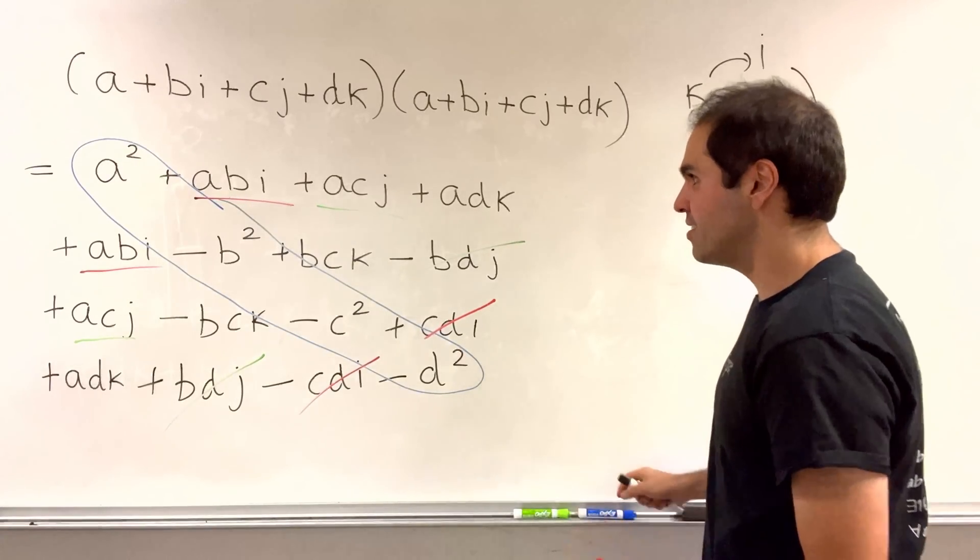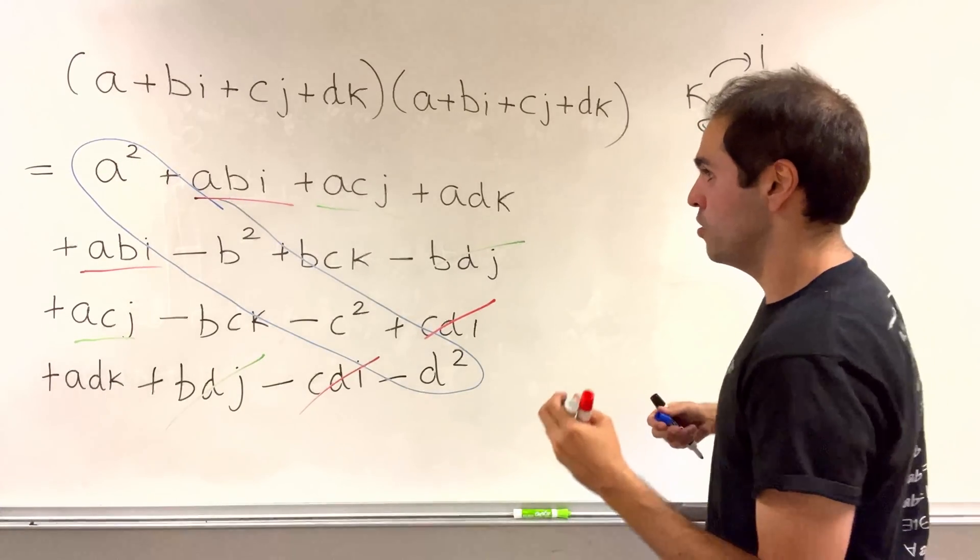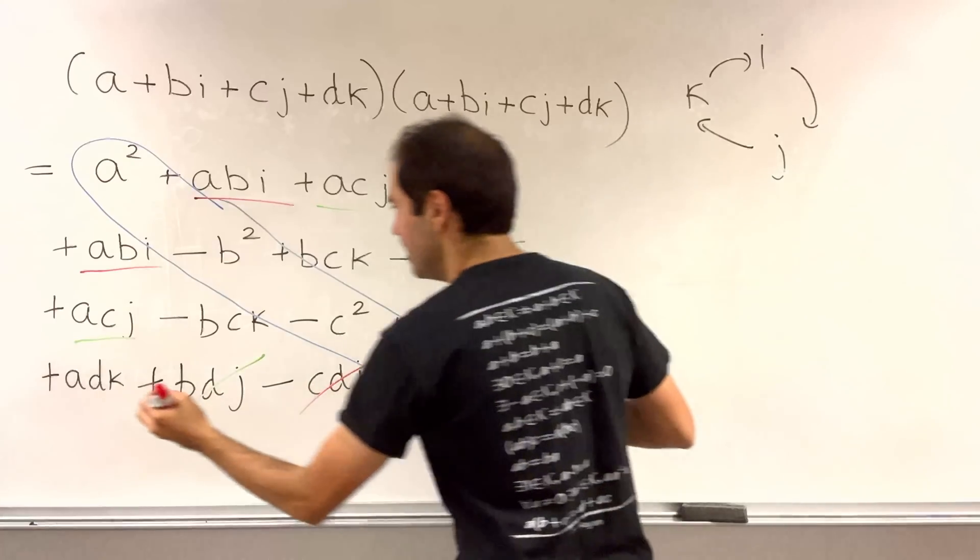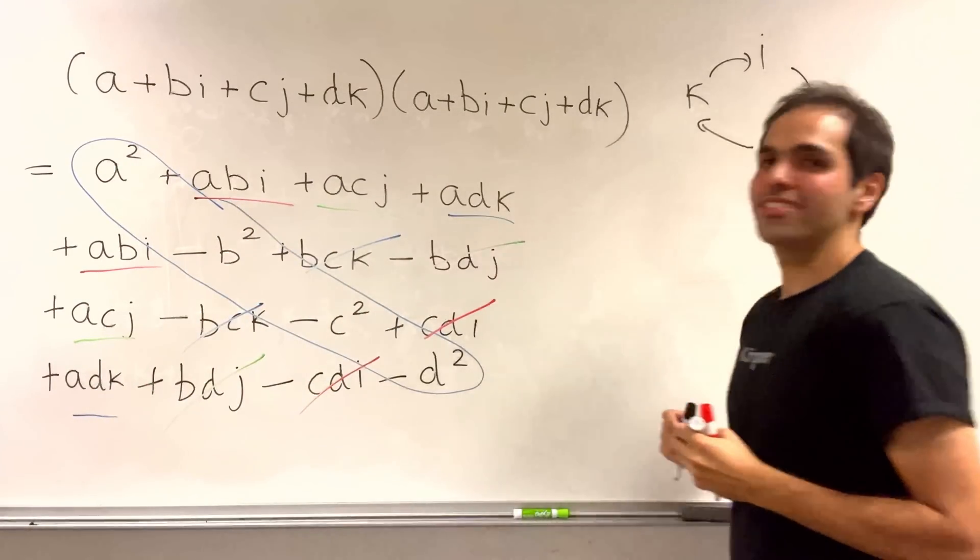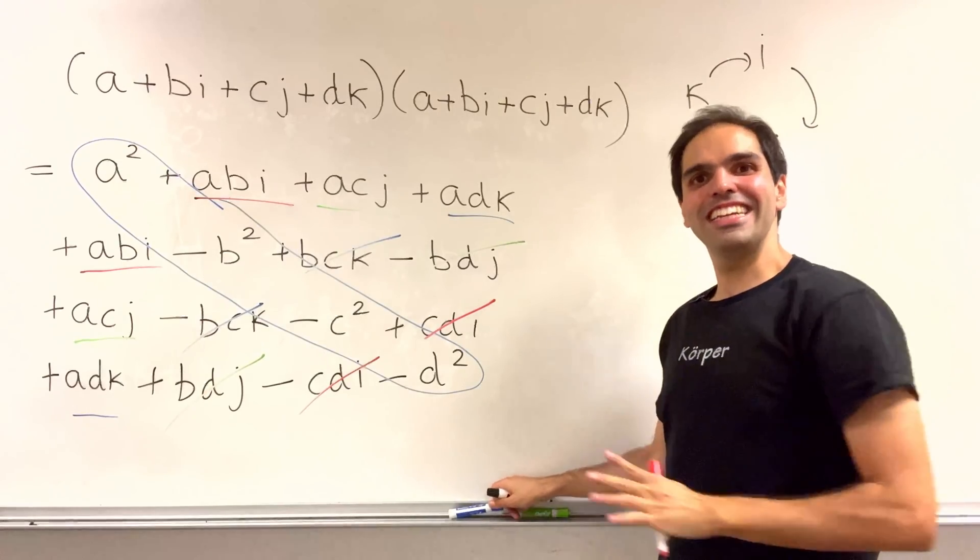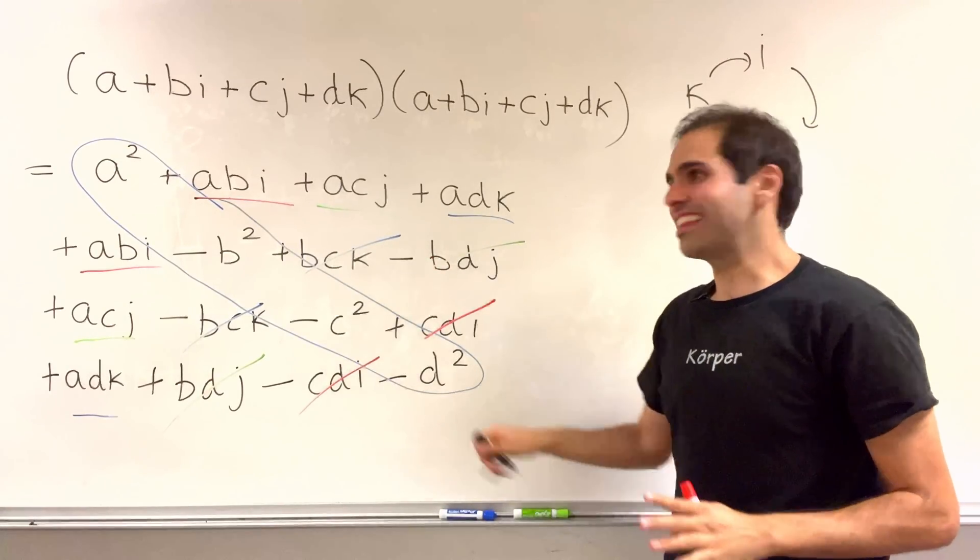And last but not least, for the k terms, so there's adk, adk, and then bck, bck, those cancel out. So you have no idea how many tries it took to get that right.